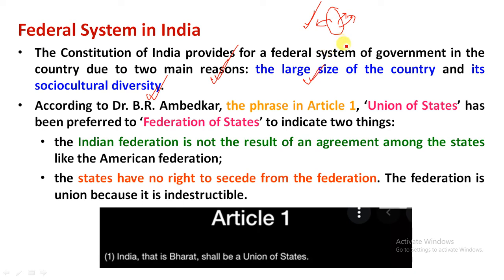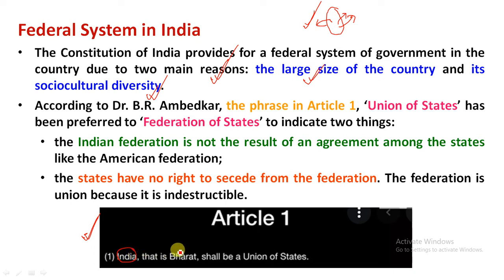Article 1 states that Bharat shall be the union of states. The constitutional reform gives the modern name India and the traditional name Bharat. What is the union of states? What is the federation of states? The union of states ensures that they remain united. What is the indestructible union of states?